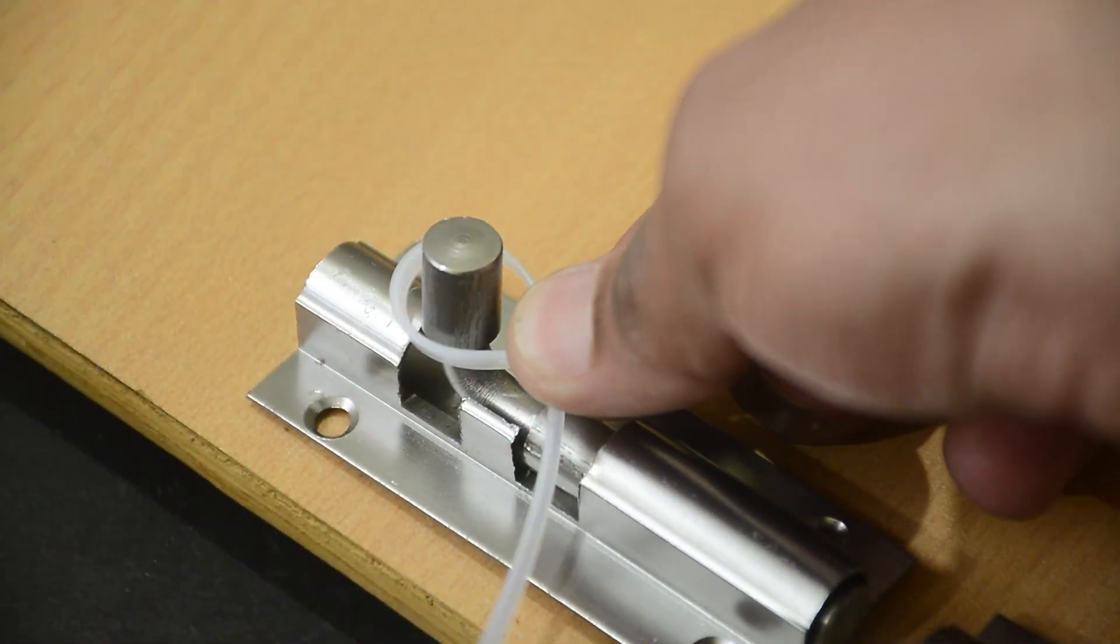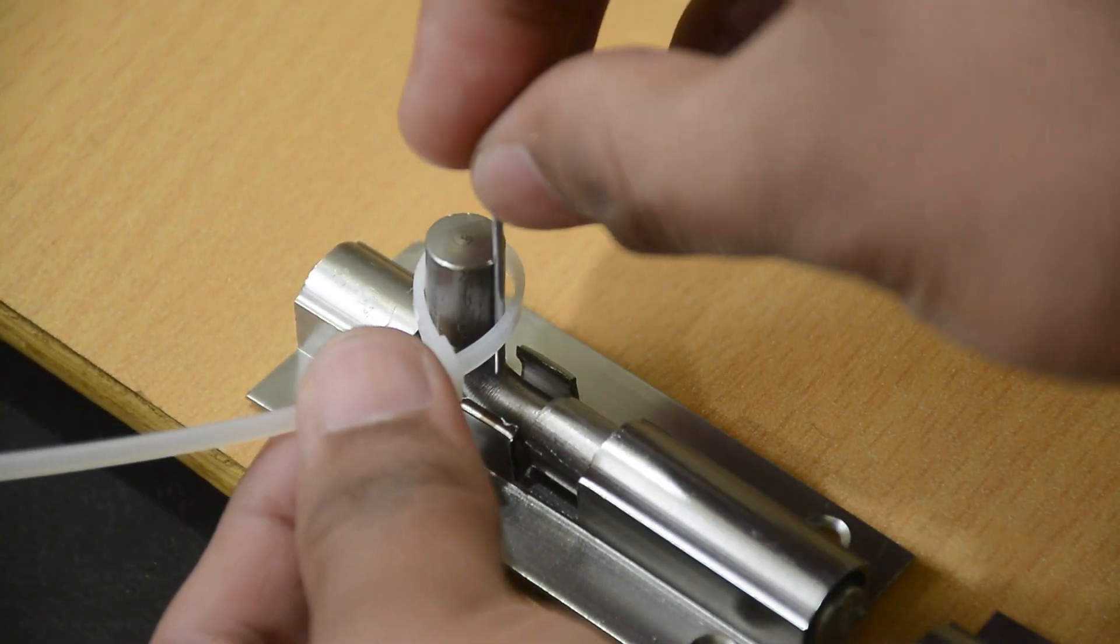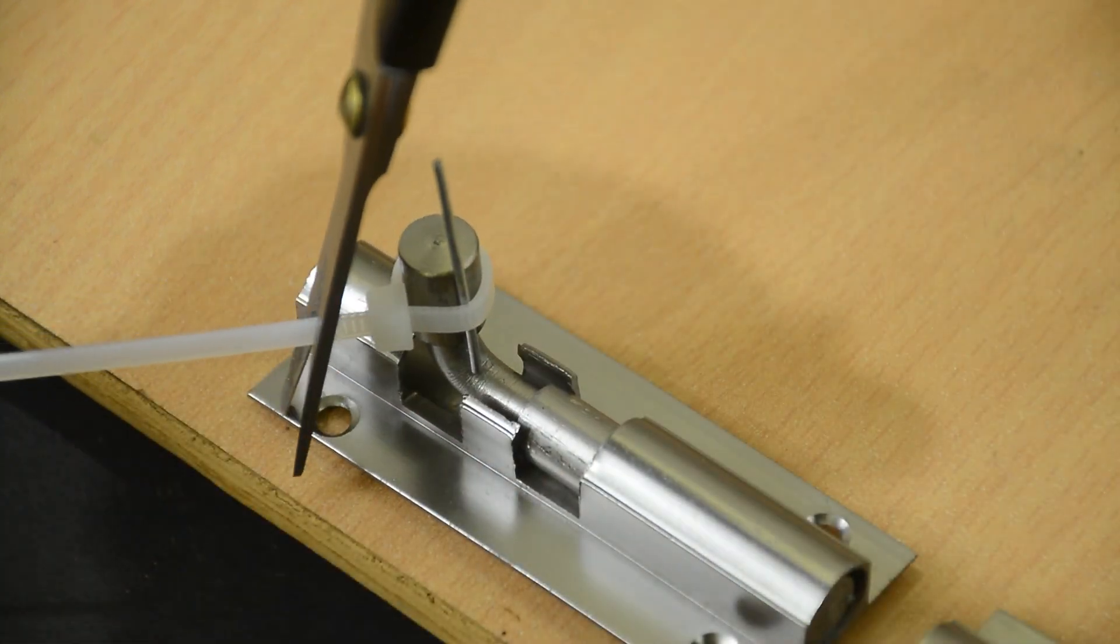Place the zip tie around the handle like this and start tightening it. Before it is completely tight, insert the pin inside it and then tighten it completely. Cut off the extra.